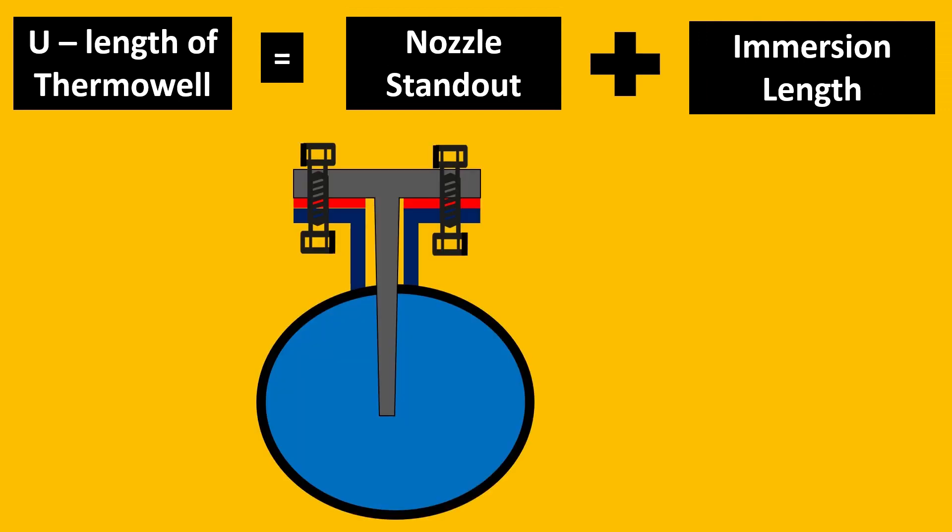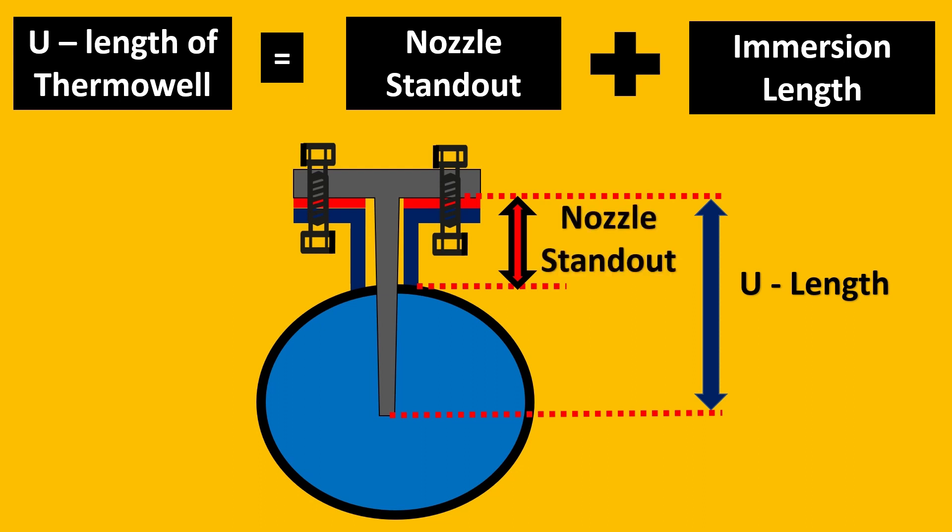Let us put this to the test. So for example we have our current thermowell which was installed. Starting from the end of the flange up to the tip of the thermowell, this is your U-length. And this can be called as nozzle standout. Nozzle standout plus how much is it immersed inside the process, or from the starting of the pipe up till the tip of the thermowell, this can be called as immersion length. So if we know both these things we can very easily calculate U-length.